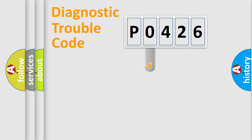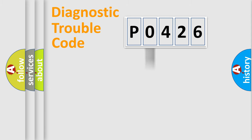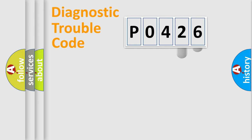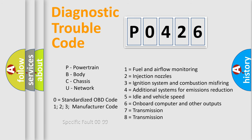This distribution is defined in the first character of the code. If the second character is expressed as zero, it is a standardized error. In the case of numbers 1, 2, or 3, it is a more specific expression of a car-specific error. The third character specifies a subset of errors. Only the last two characters define the specific fault of the group. This division is valid only if the second character code is expressed by the number zero.